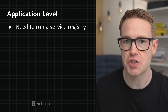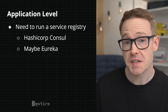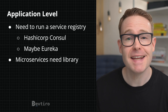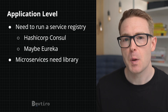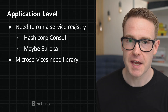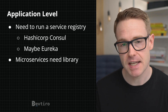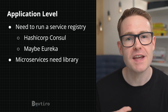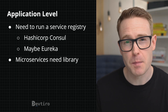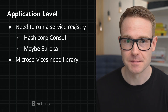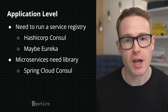Implementing service discovery at the application level requires that you run some kind of service registry — an example might be HashiCorp Consul or possibly Eureka. In addition, each microservice needs to include the relevant library that allows it to communicate with the service registry. It's worth noting that while Eureka version 1 is still actively supported, Eureka version 2 has been discontinued, and a number of the Netflix OSS components have entered maintenance mode — so always check support status when picking your service discovery technology.